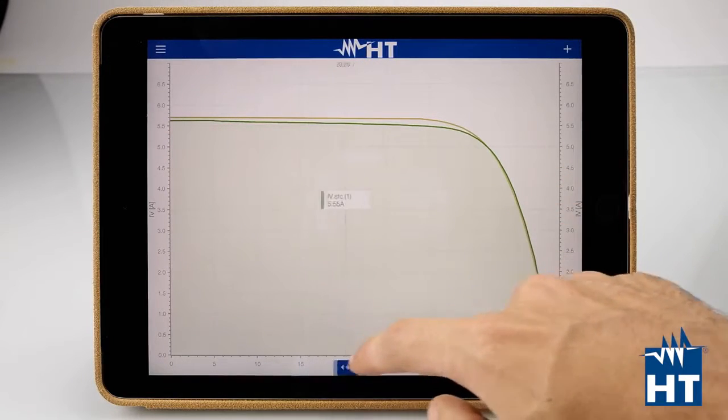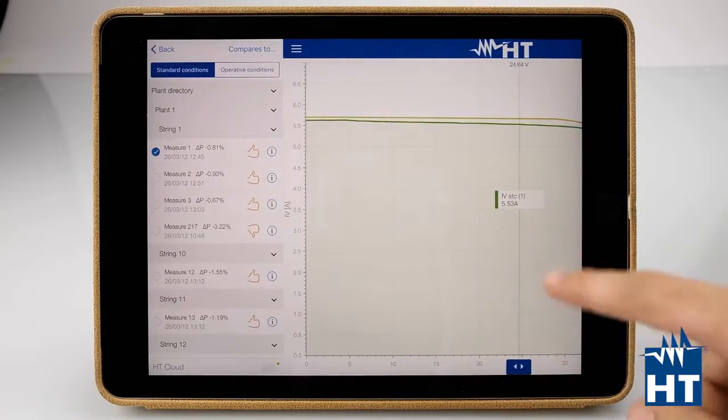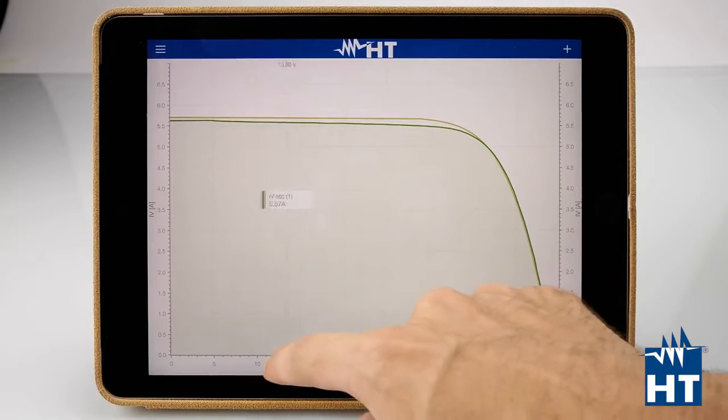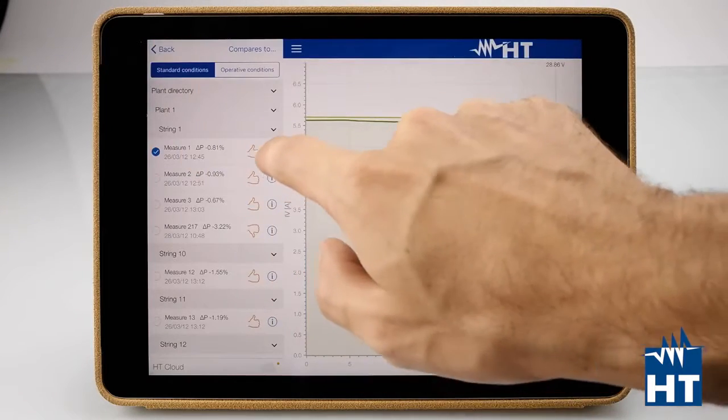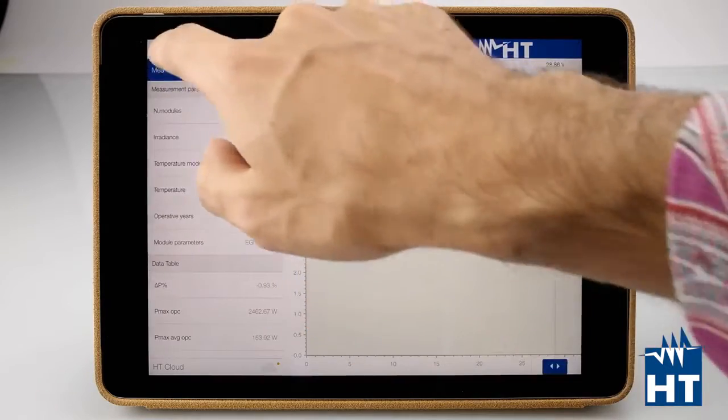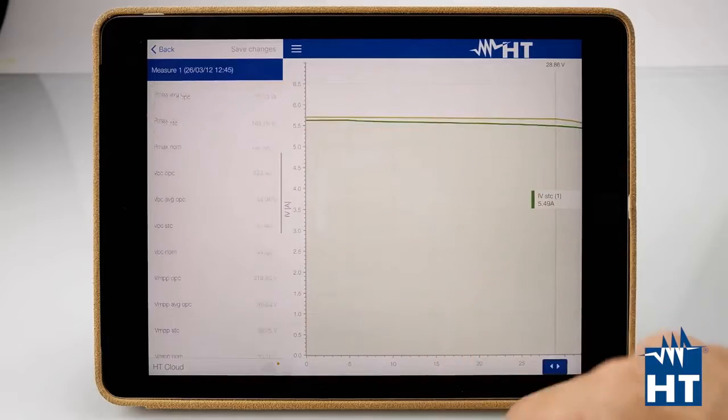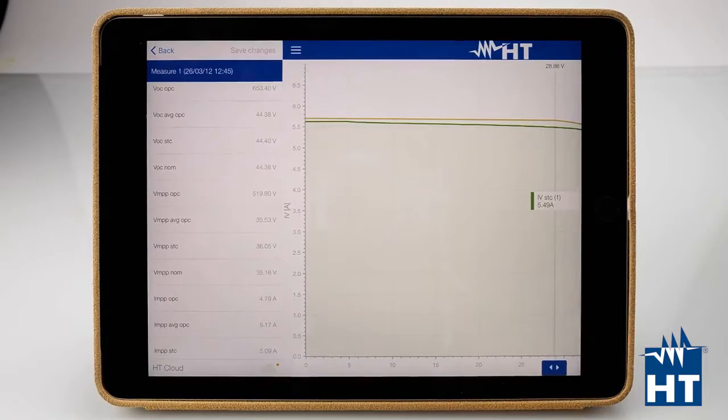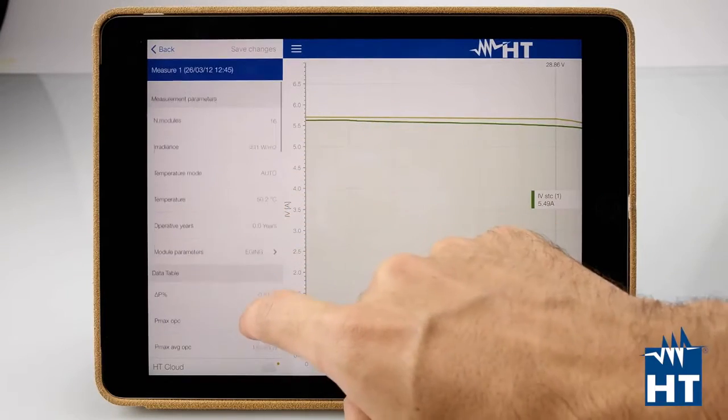We can find some values here, for example, where we move the cursor. And then also we can press I, like info. Here we have all the data about the measure. It's really pretty, a lot of stuff here.